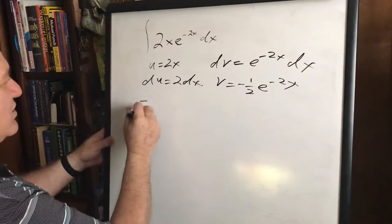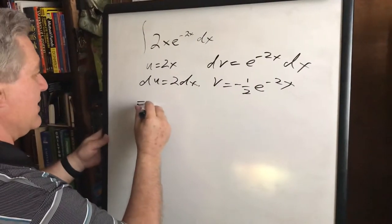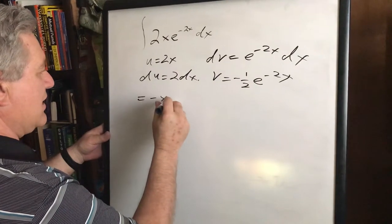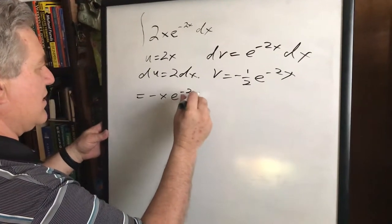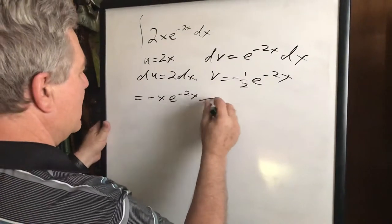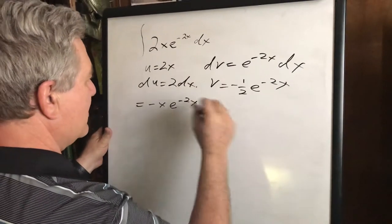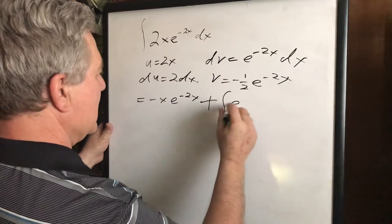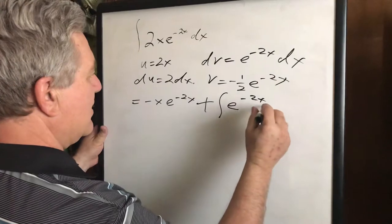Now this equals, now this uv, now you immediately got negative x e to the negative 2x. And then minus minus makes a plus. Now that just gets rid of one half and you get the integral of e to the negative 2x dx.